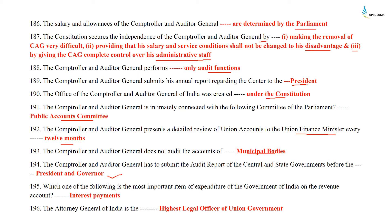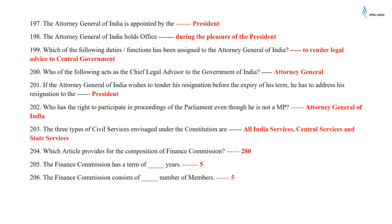What is the most important item of expenditure of the Government of India on the revenue account? It is the interest payments. The Attorney General of India is the highest legal officer of the union government. The Attorney General of India is appointed by the President and holds office during the pleasure of the President. What duties have been assigned to the Attorney General of India? It is to render legal advice to the central government. Who acts as chief legal advisor to the Government of India? It is the Attorney General. If the Attorney General of India wishes to tender his resignation before the expiry of his term, he has to address his resignation to the President. Who has the right to participate in proceedings of Parliament even though he is not an MP? It is the Attorney General of India.